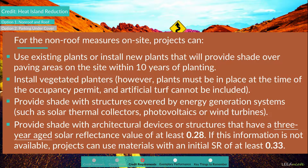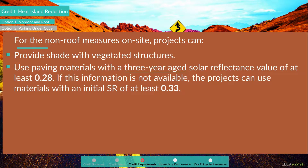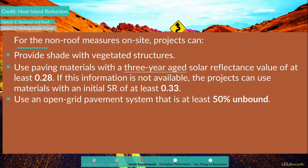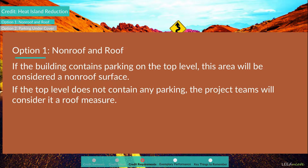Projects can also provide shade with architectural devices or structures that have a three-year aged solar reflectance of at least 0.28 (or initial SR of at least 0.33 if aged data is unavailable), provide shade with vegetated structures, use paving materials with a three-year aged SR of at least 0.28 (or initial SR of 0.33), or use an open-grid pavement system that is at least 50% unbound. Note: if a building contains parking on the top level, that area is considered a non-roof surface; otherwise it is treated as a roof measure.